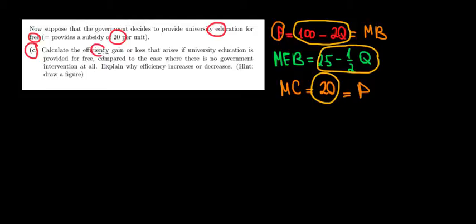Now calculate the efficiency gain or loss that arises if university education is provided for free compared to the case where there is no government intervention, meaning that the university would decide privately how much to offer. Let's do it in this video with free education. Next one we'll do it with private provision and we'll compare on a graph.